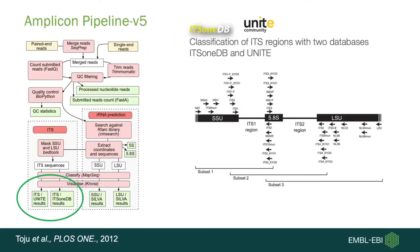For the amplicon pipeline, in addition to small subunit and large subunit ribosomal RNA, we've introduced annotation of the Internal Transcribed Spacer (ITS). These regions are increasingly used to classify eukaryotic, in particular fungal, organisms. The ITS regions 1 and 2 fall between the small and large subunit rRNA and 5.8S rRNA. We take predictions from LSU and SSU, mask them in the original dataset, and use this as input for ITS. The databases we map against are ITS1db and UNITE, which covers both ITS1 and ITS2 regions.